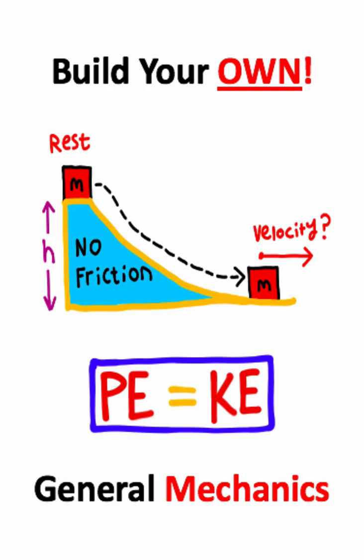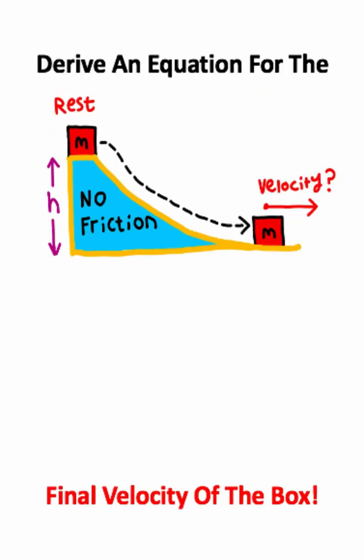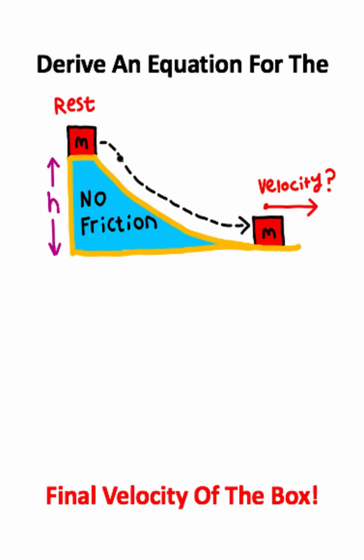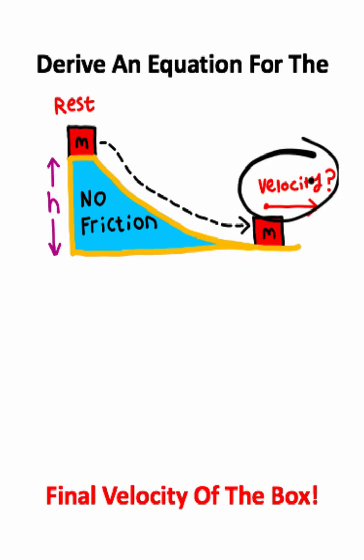This kind of problem solving is a very important skill to have in physics and engineering. In this problem, we have a box that initially starts at rest on top of the hill. The box then slides down the hill, and we want to find an equation for the maximum velocity of this box.